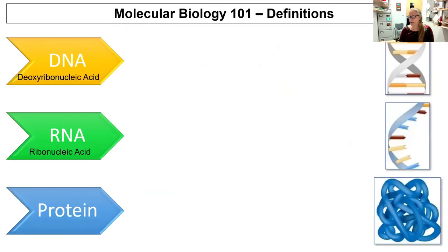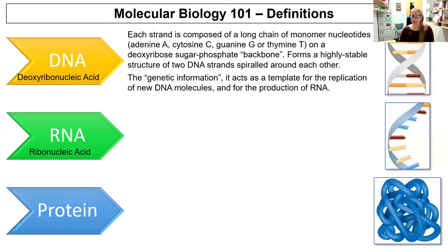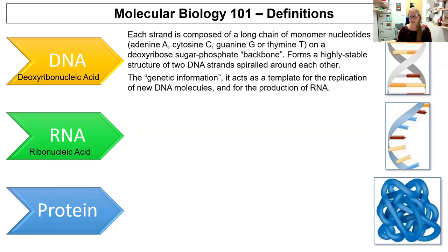A number of definitions are necessary. DNA is deoxyribonucleic acid. Each strand is composed of a long chain of monomer nucleotides — adenine, cytosine, guanine, or thymine — on a deoxyribose sugar phosphate backbone. In the picture the backbone is the thing that's twisting around, and the nucleotides are binding across. It forms a highly stable structure of two strands spiraled around each other — this is the double helix that Rosalind Franklin discovered and Watson and Crick made famous.